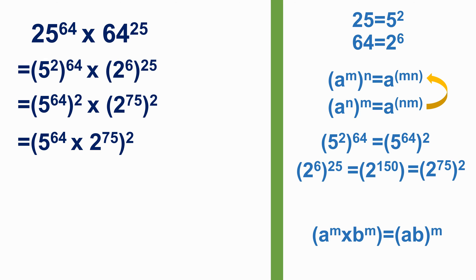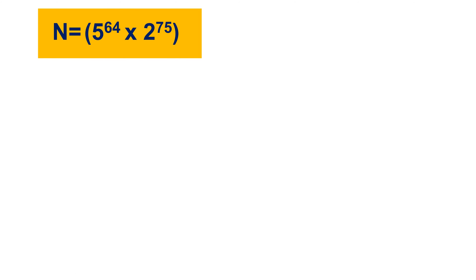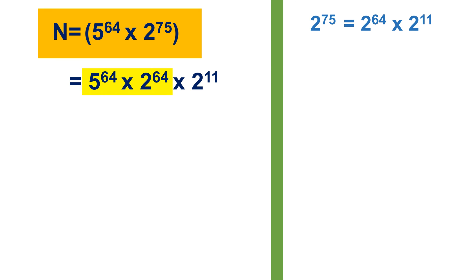So we get n equals 5 to the power 64 times 2 to the power 75. It would take us so much time and effort to simplify it the usual way, so we try to find an easier way out. What we do is write 2 to the power 75 as 2 to the power 64 times 2 to the power 11. So our expression becomes 5 to the power 64 times 2 to the power 64 times 2 to the power 11. We then combine 5 to the power 64 and 2 to the power 64 using the law of indices, keeping 2 to the power 11 as it is.